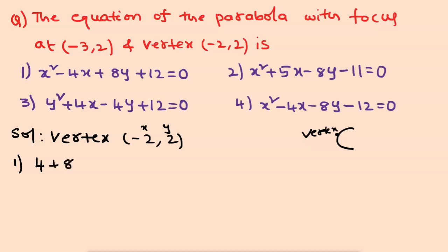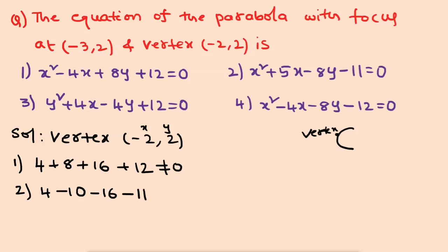First option check: 4 plus 8 plus 8 plus 16 plus 12 — total is not zero, so the first option is not correct. Second option: minus 2 squared is plus 4, and 5 times minus 2 is minus 10 — checking gives minus 4 minus 8 plus 8 plus 12, which is not zero. Third option: y squared is 4, 4x equals minus 8, so minus 4 minus 8 plus 12 — simplifying gives minus 16 plus 16 equals 0. The third option satisfies the equation.